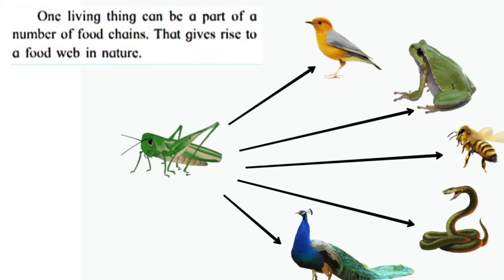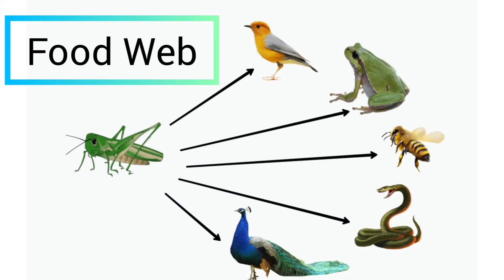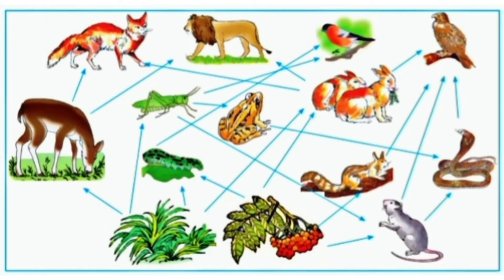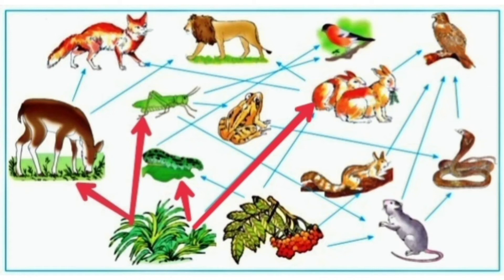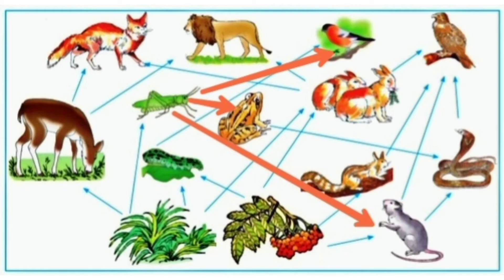One living thing can be a part of a number of food chains, and that gives rise to a food web in nature. For example, grass is eaten by a deer, grasshopper, silkworm and rabbit — so one living thing is part of many food chains. The grasshopper is eaten by rat, frog and sparrow. This is called a food web, and it is formed by the interlinking of several food chains.